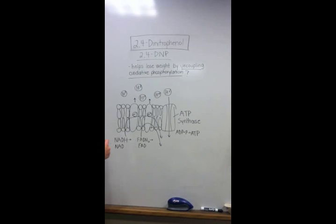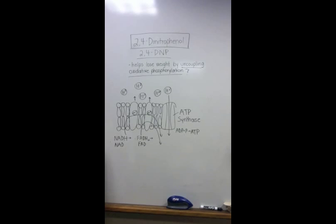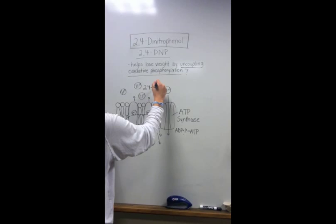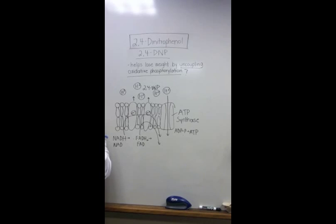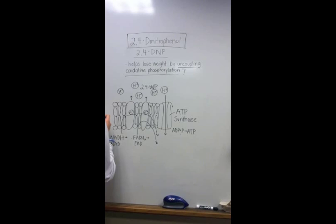What 2,4-DNP does is it uncouples oxidative phosphorylation. It disconnects the oxidation and the phosphorylation aspects by getting rid of the H+ gradient. When 2,4-DNP is present, it provides another passage for the H+ ions across the membrane and carries the ions directly across the membrane without having them go through the ATP synthase. So it will carry one of these H+ ions and then just go straight through.